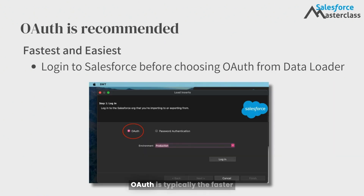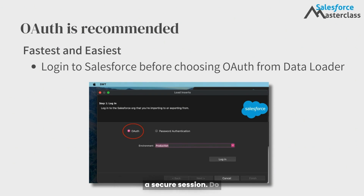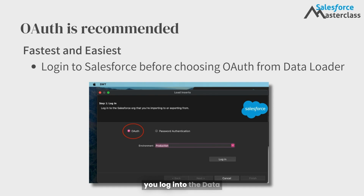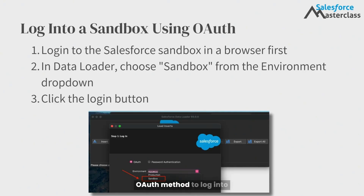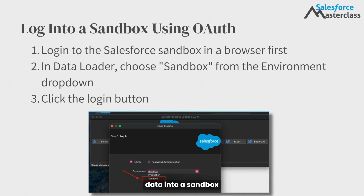OAuth is typically the faster and easier login method when you've already established a secure session. Do this by logging into Salesforce from your browser before you log in to the Dataloader. Using the OAuth method to log in to Dataloader when you want to load data into a sandbox uses the same process as production.